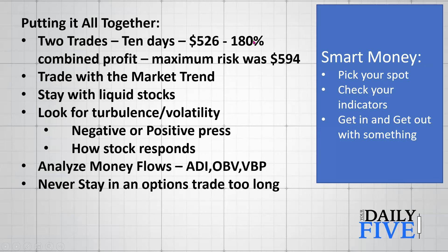Putting it all together: two trades, taking about 10 days to develop, made $526 combined — roughly 180% gain — with a maximum risk of loss of $594. Our profit and loss were relatively close because when you buy options, the maximum loss is your initial investment. Always trade with the market trend, stay with liquid stocks, and start your setup by looking for turbulence and volatility. Check the volatility index, watch how stocks respond to news, analyze money flows — accumulation/distribution, on-balance volume, volume by price. And critically: never stay in an option trade too long. We got out with profits in a few days.